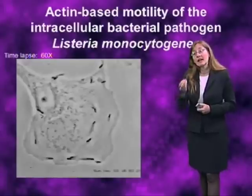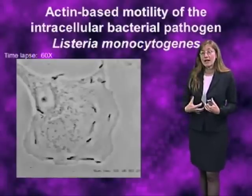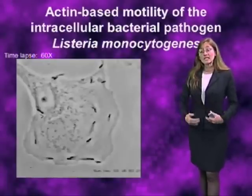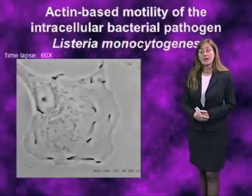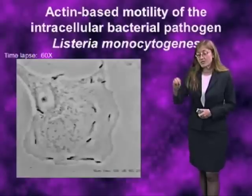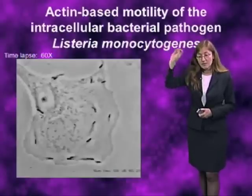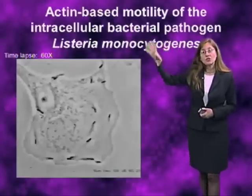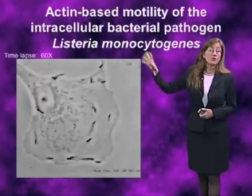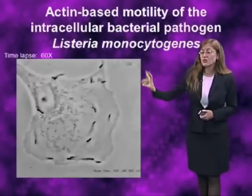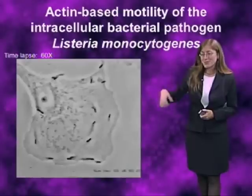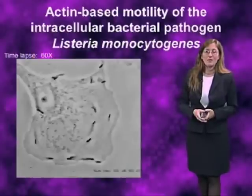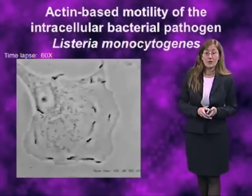These bacteria, after you eat them, invade the human body through the epithelial cells lining the intestine. They do this with a series of proteins that bind specifically to receptors on those cells, induce the cells to take them up, and then proceed to replicate within the cytoplasm of those cells — actually within the human host.